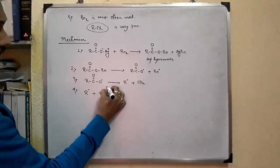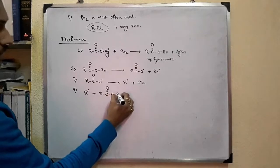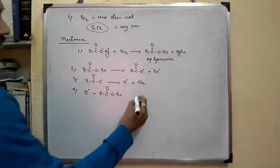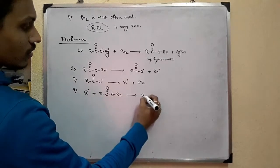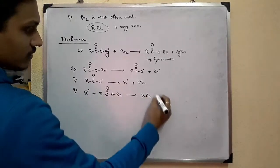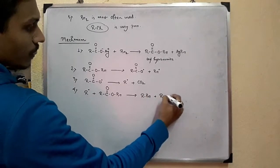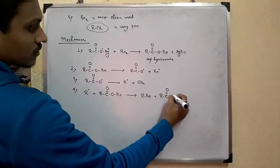this alkyl free radical abstracts a bromide from a further acylhypobromite to form bromoalkane plus the radical.